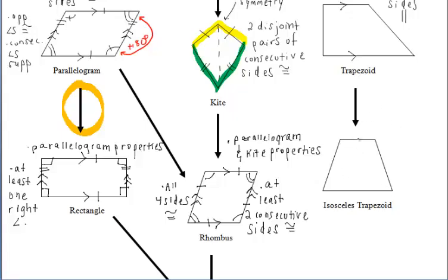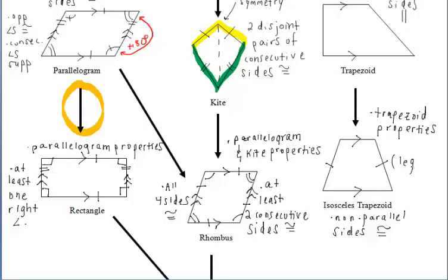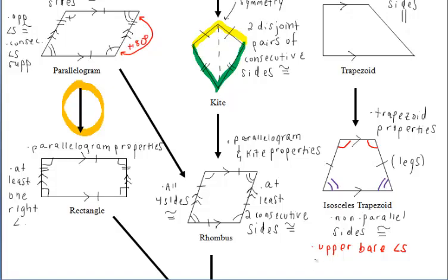Now let's discuss the isosceles trapezoid. It holds all the properties of the trapezoid — at least one pair of opposite sides (the bases) are parallel. The non-parallel sides, called the legs, are congruent. The angles I highlighted in red are the upper base angles, and the angles highlighted in purple are the lower base angles. You'll learn more about these in section 5.5.